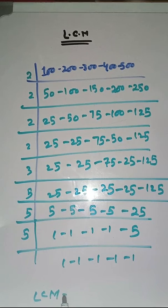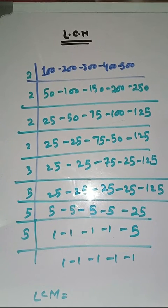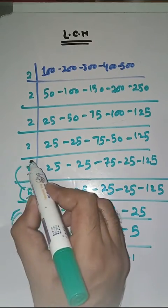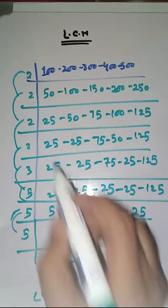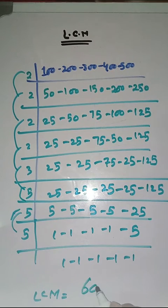So LCM of 100, 200, 300, 400, and 500 is equal to product of its prime factors which is 2 times 2 times 2 times 2 times 3 times 5 times 5 which is equal to 6000.